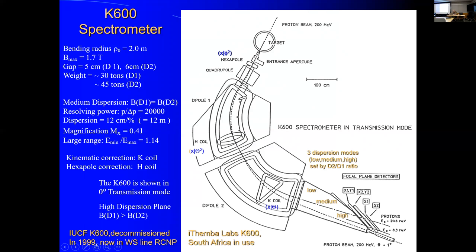I already discussed the detector system. One particular feature is: if you make dipole one and dipole two identical in field, you are at the medium dispersion plane. You would have your detector not at the high-dispersion plane but at the low-dispersion plane. If you change the ratio of dipole one to dipole two, you get different focal planes with higher or lower dispersion. So this spectrometer has built-in variable dispersion by changing the dipole fields. You can simulate all of this in ion optics codes.